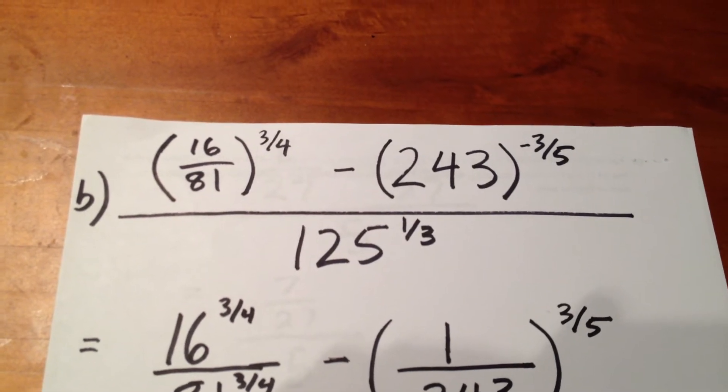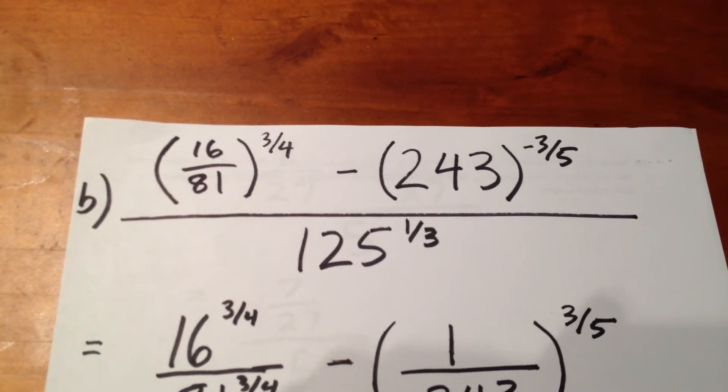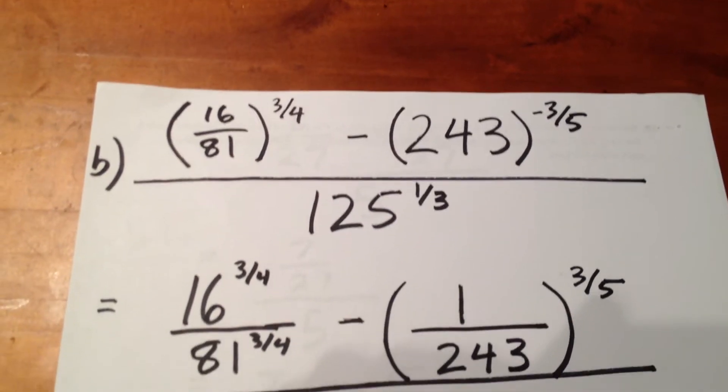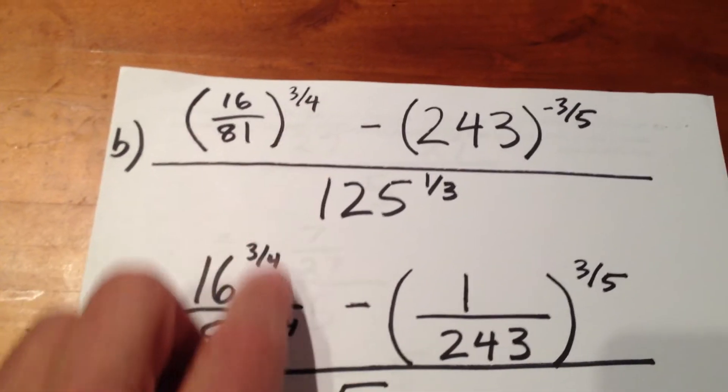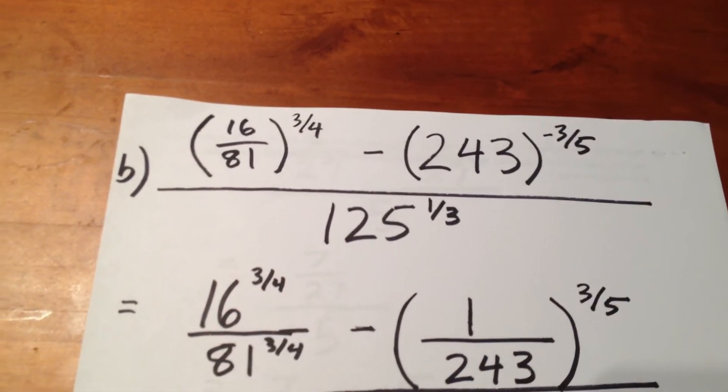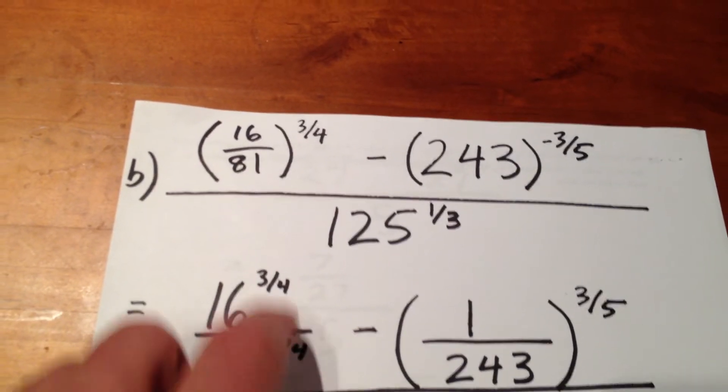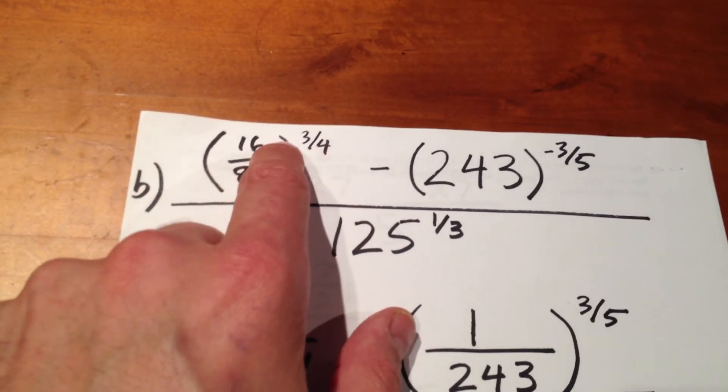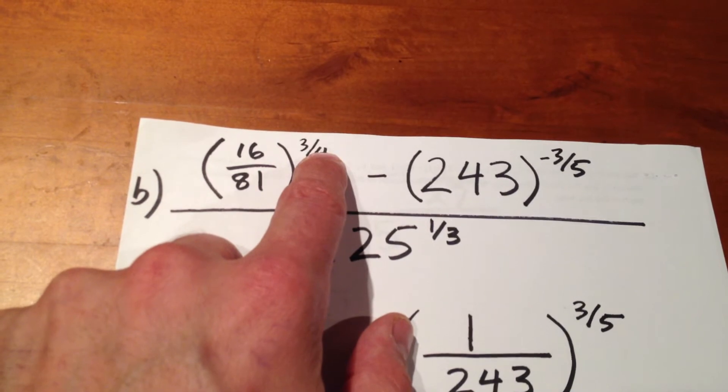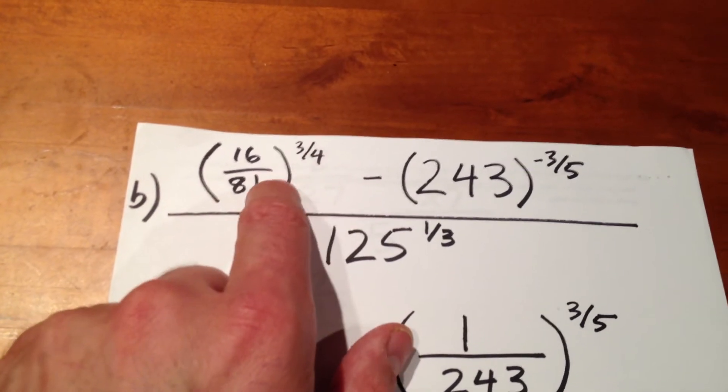16 over 81 as a quantity to the exponent three-quarters means we can evaluate 16 to the three-quarters and 81 to the three-quarters. In other words, we evaluate the three-quarters as the exponent on the numerator and the denominator.